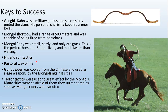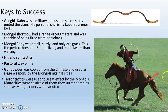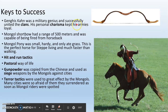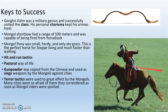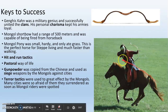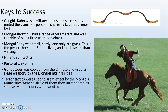Hit-and-run tactics worked like this: Mongols ride up on horses with their bows. The Chinese army — peasants with spears lined up — is in front of them. The Mongols shoot arrows. The Chinese charge at the Mongols to stop the shooting. The Mongols turn around and ride away. The Chinese think they're winning, so they chase them. The Mongols stop, turn around, and shoot again. The Chinese keep chasing. Rinse and repeat until all the Chinese are dead.